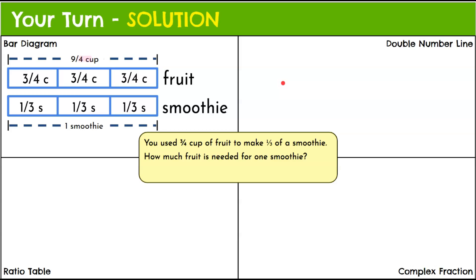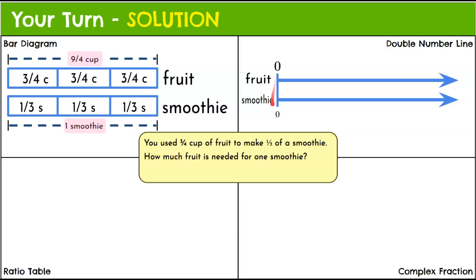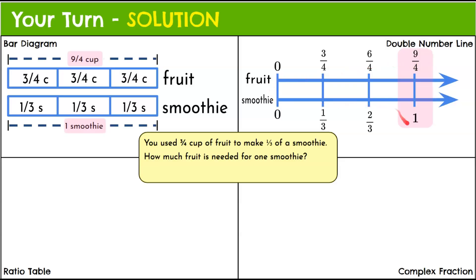Now the double number line — fruit on top, smoothie on the bottom, starting at zero. Our first rate is three-fourths of a cup for one-third of a smoothie. We mark two-thirds and then one whole smoothie on the bottom. For every additional third, we add three-fourths cup of fruit: three-fourths plus three-fourths is six-fourths, six-fourths plus three-fourths is nine-fourths. So nine-fourths cups of fruit for one smoothie — also written as two and one-fourth.